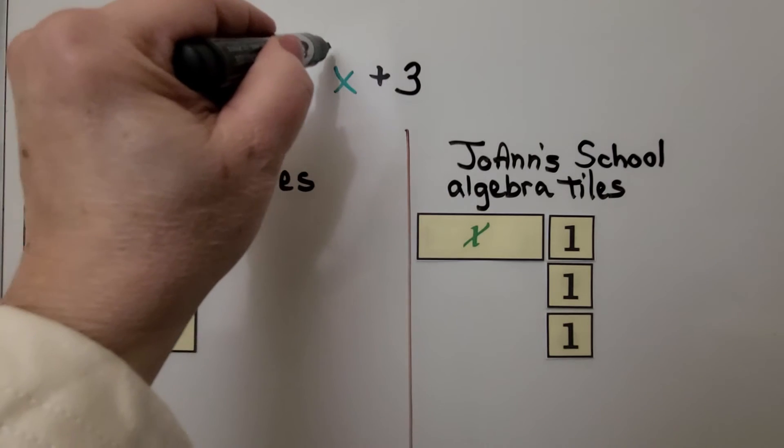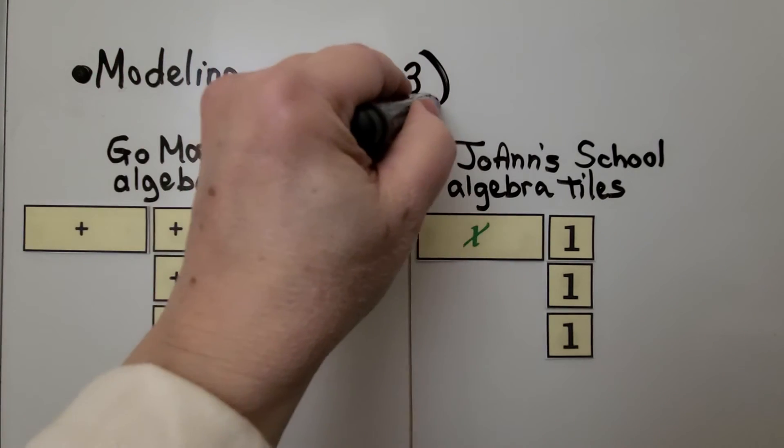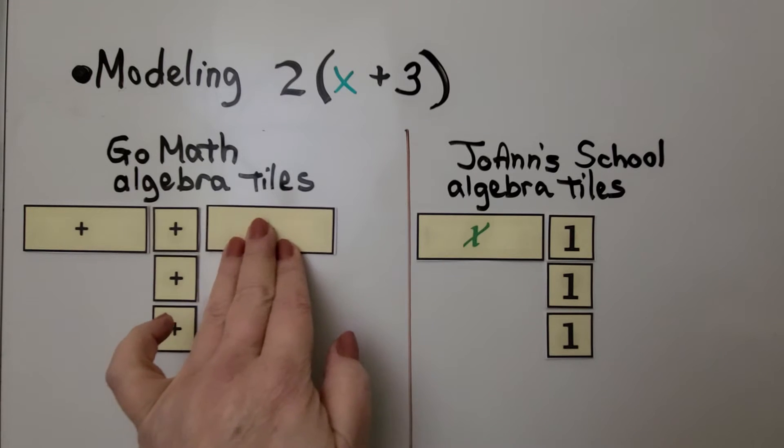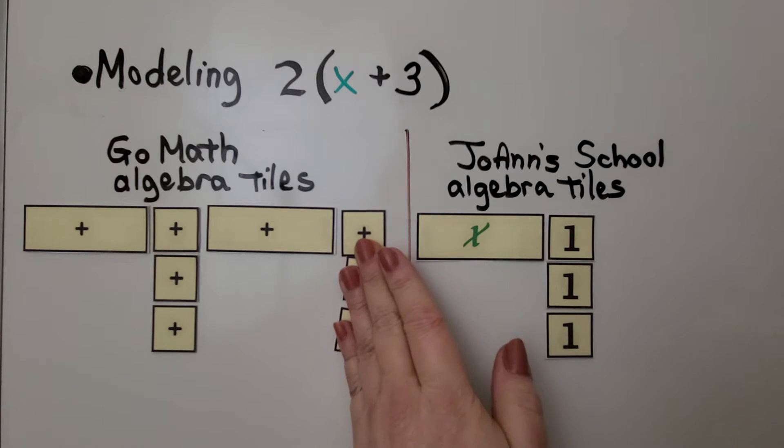If we want to model two times x plus three, with the x plus three in parentheses, now we have two rectangles, and we add three more squares.